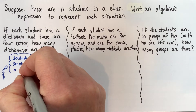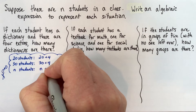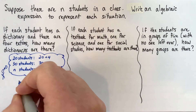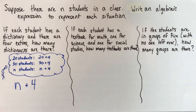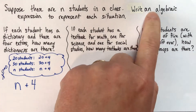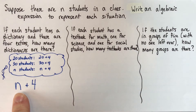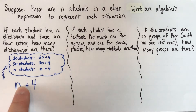So, what if we had n students? We take the number of students — that's n — and add 4 to it. So our answer is n plus 4. There would be n plus 4 dictionaries. I want to stress: this is the final answer. We're asked to write an algebraic expression, and this is an expression showing how many dictionaries there would be if there were n students, each with a dictionary and four extras. The answer is n plus 4.